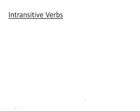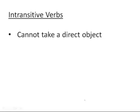We learned about transitive verbs. Transitive verbs were verbs that take a direct object. The opposite of transitive verbs are intransitive verbs, and intransitive verbs do not take a direct object or cannot take a direct object. So let's look at a few examples of intransitive verbs to see how they're different from transitive verbs that take a direct object.